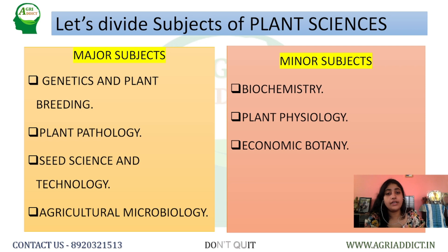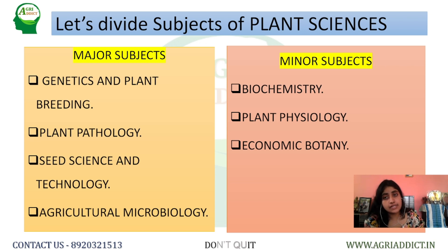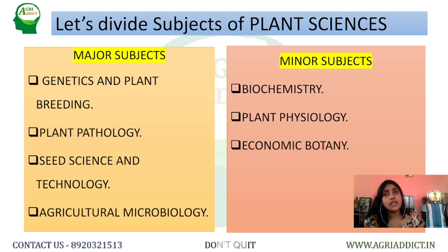As I have already divided in the PPT, let us first decide why you should choose the plant sciences module. From my perspective, if you have interest in basic sciences, you should obviously go for plant sciences because this subject is mainly conceptual. You don't have to memorize everything, though in plant pathology and seed science and technology a few portions require memorization. The main subjects — genetics and plant breeding — are totally concept-based and you have to understand those.